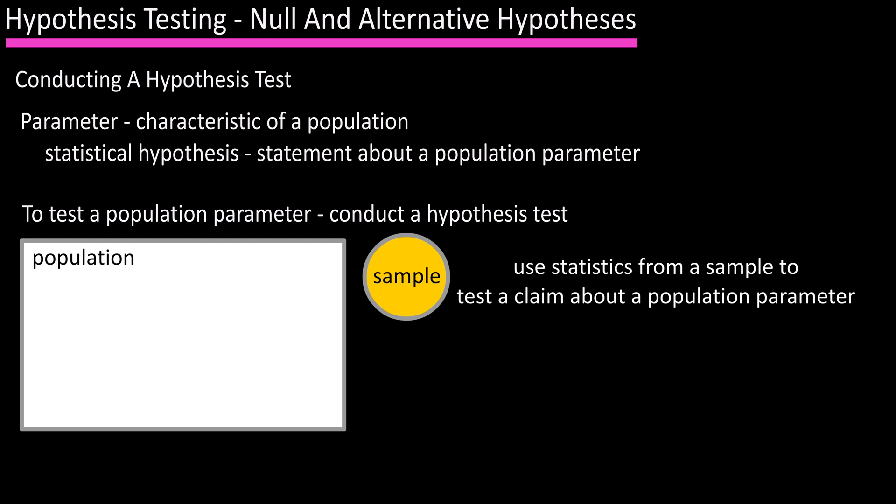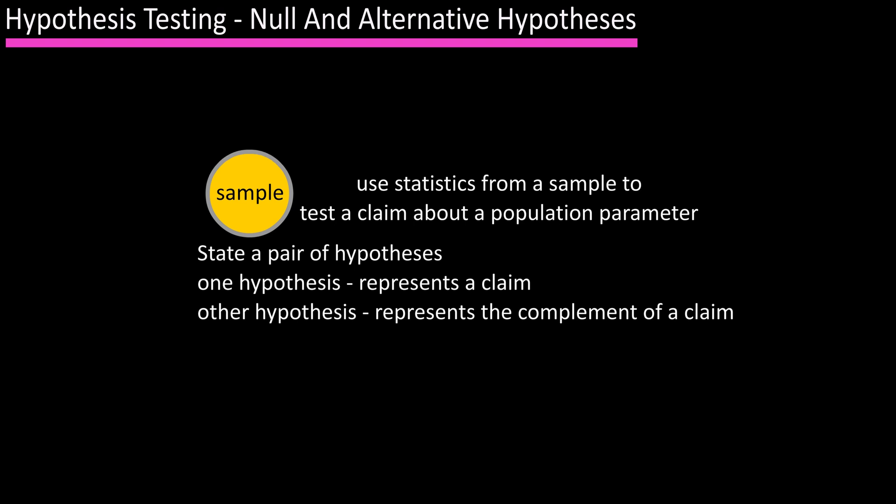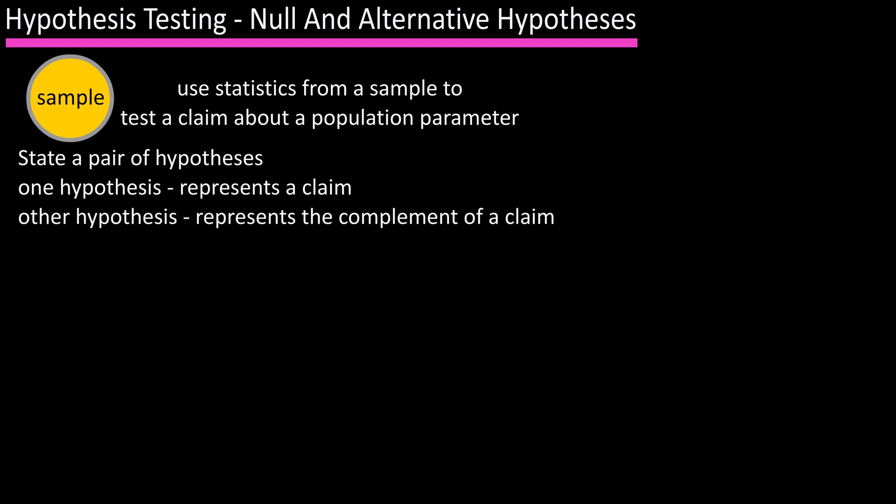In this procedure we start by stating a pair of hypotheses. One of the hypotheses represents the claim and the other hypothesis represents the complement of the claim. So in our example, the claim that Smart Alex made was that mu, the population mean, is equal to 138, and the complement of the claim is that mu does not equal 138.